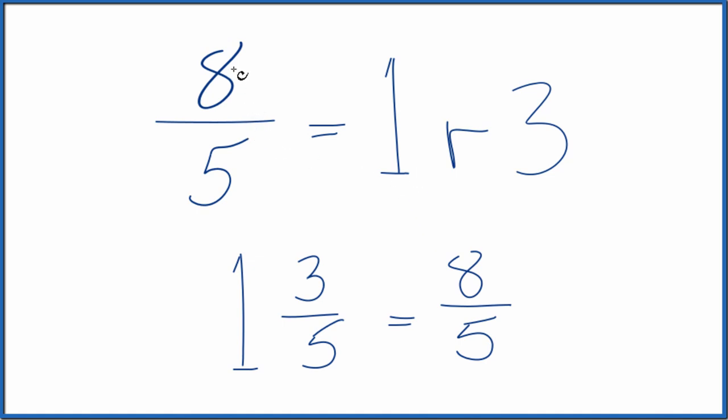So to recap, we divided 8 by 5. We got 1 remainder 3. 1 becomes the whole number. The remainder, that's the numerator, and we take our original denominator there, make it the denominator here. So 8 fifths equals 1 and 3 fifths.